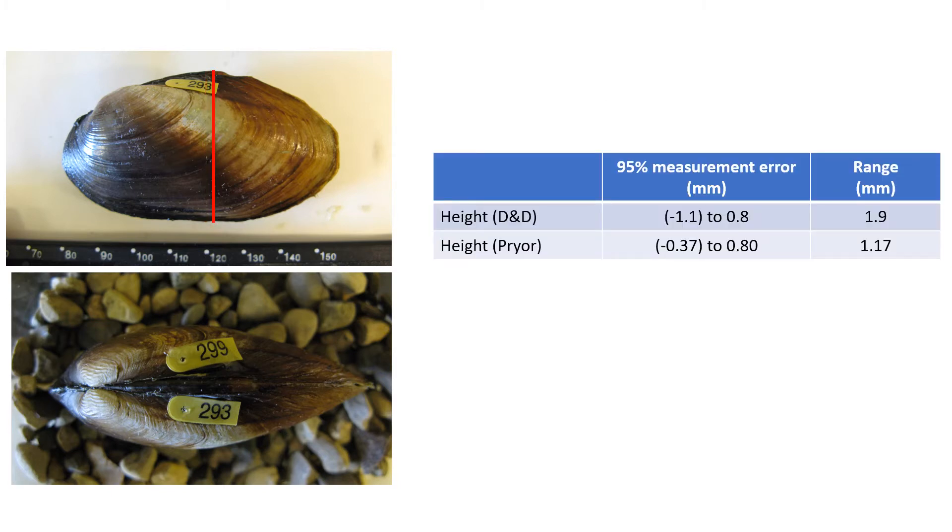And here's where I try to compare apples to apples. So the shell height measurements for Downing and Downing, again, ranged from negative 1.1 to 0.8. And if you take those numbers, subtract them one from the other, you get a total range, magnitude of range, of about 1.9 or just shy of two millimeters from top to bottom.